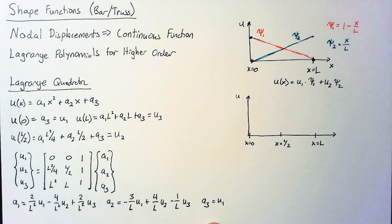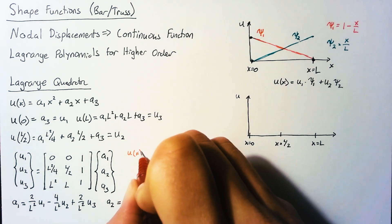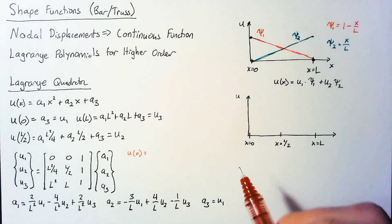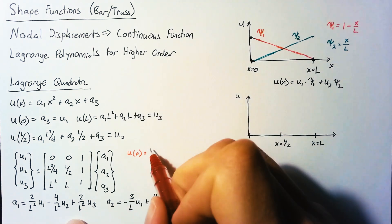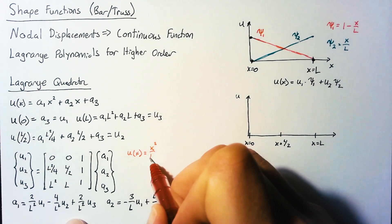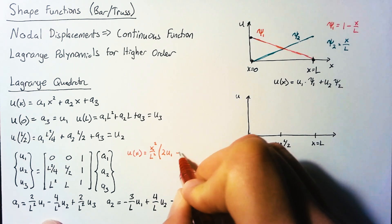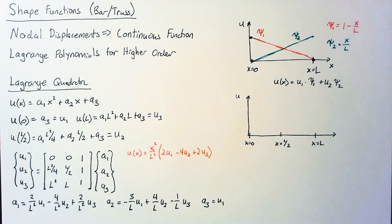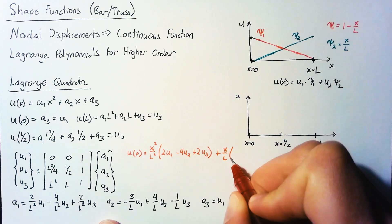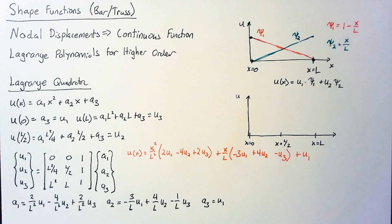So now we can take these a values and plug them into our original function. Our u of x is going to be equal to x squared. I'm going to take out the l squared to make things easier. So we get x squared over l squared, all multiplied by 2 times u1 minus 4 times u2 plus 2 times u3. Then we can do the same for a2. And then finally, a3 is nice and simple.